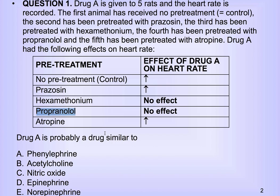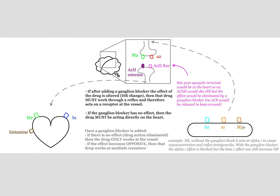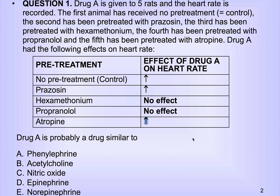We know that atropine works as a muscarinic blocker, so it mimics sympathetic effects. But this is saying it still increases heart rate. So you're left thinking, how could I cause vasodilation if my M3 receptor is blocked? Well, there's only one other thing that could do that — that doesn't involve any receptors but still causes vasodilation. And if you're thinking nitric oxide, you are correct. So that's how you work through this question by process of elimination.